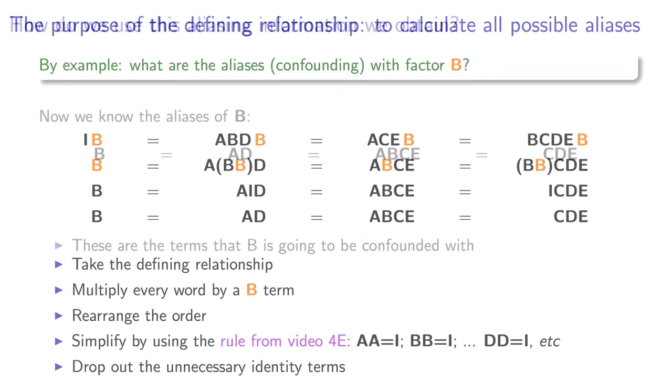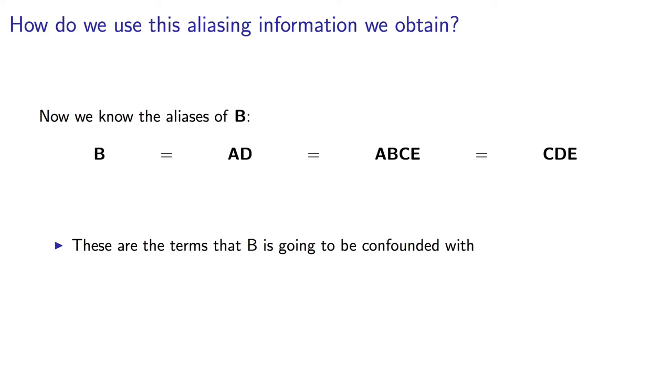So this becomes B equals A times D equals ABCE equals CDE. Let's interpret that quickly. It tells me that factor B is going to be aliased with the AD interaction, as well as the fourth-order interaction of ABCE and the third-order interaction of CDE.